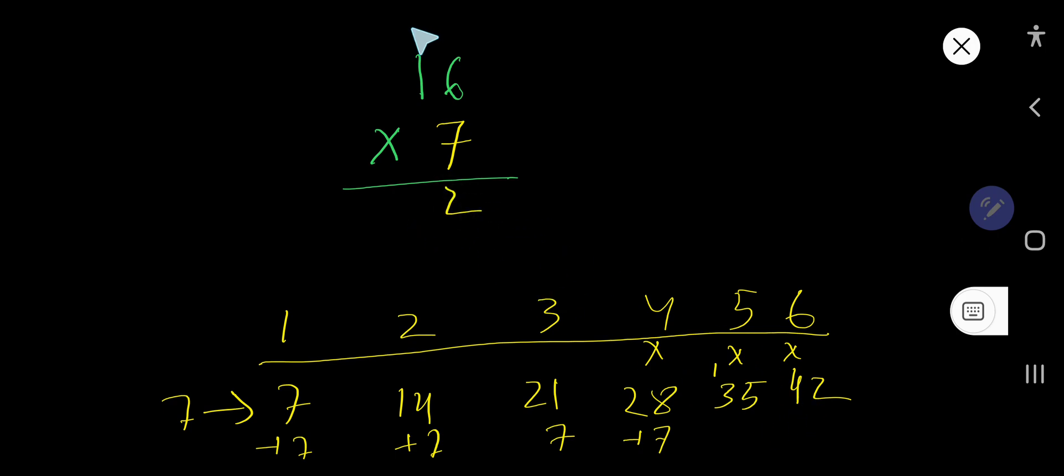So write 2 and carry 4. 7 times 1 is 7, plus 4, that is 11. So write here. So this is the result.